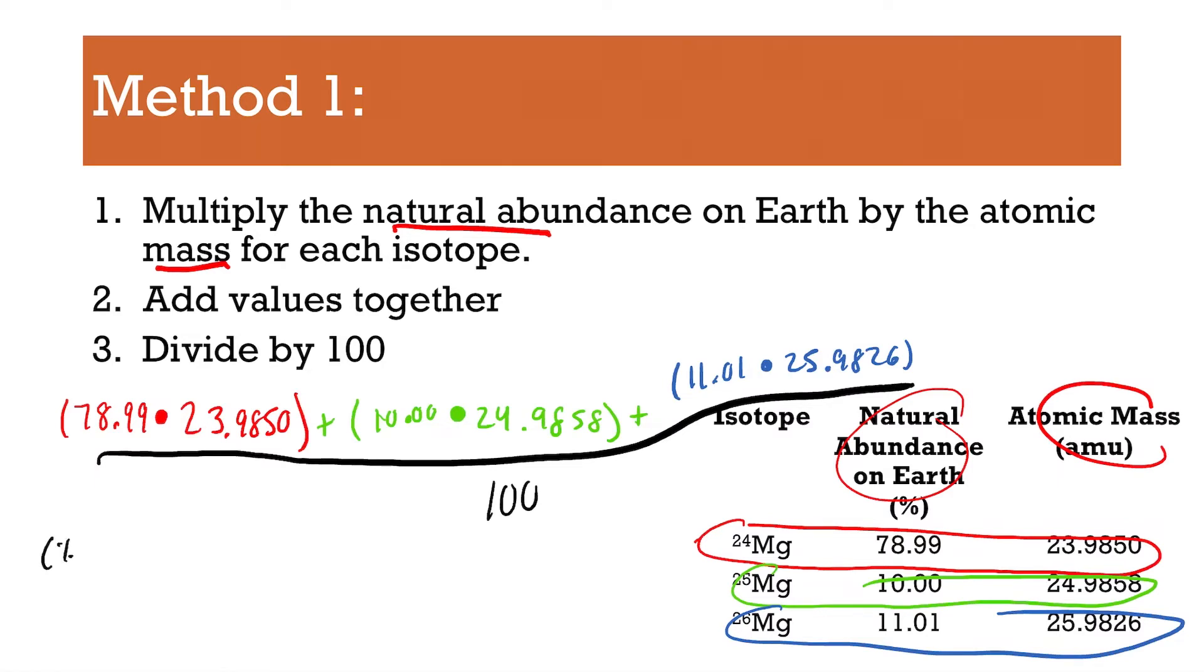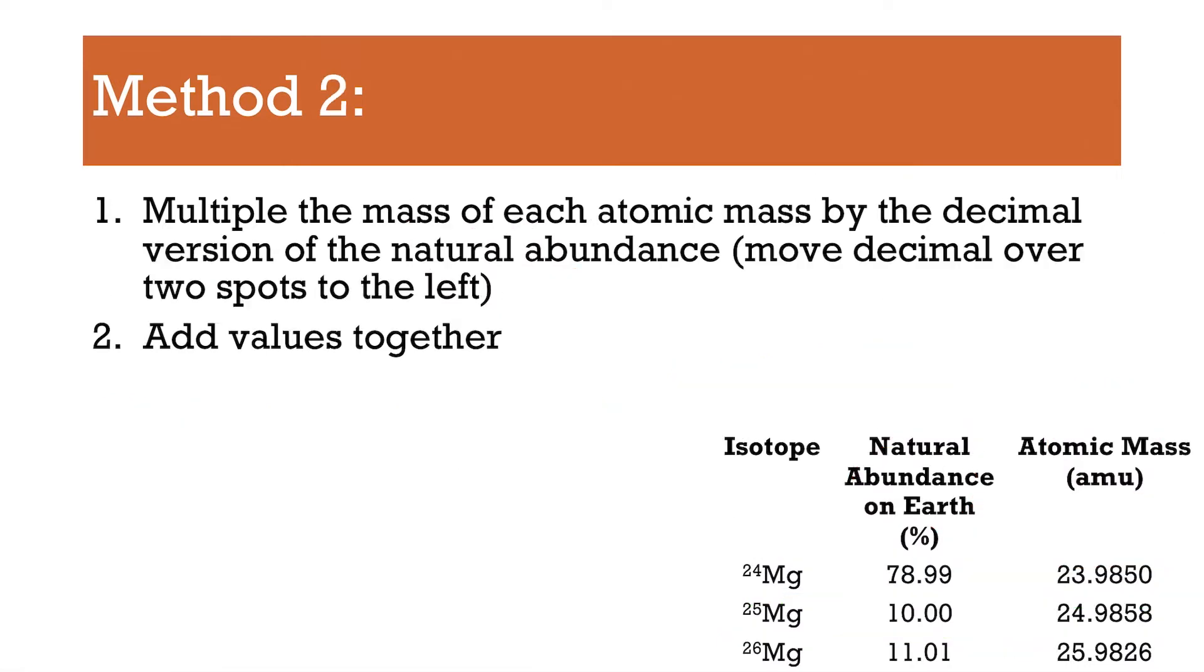All of that divided by 100. So basically, it's percent 1, mass 1, plus percent 2, times mass 2, plus percent 3, plus mass 3, as many times as you need. So if you were to put this into a calculator, parentheses are your best friends. So the entire top thing, in parentheses, divided by 100, you get 24.305 AMU. And if you were to look at the periodic table for magnesium, it would say 24.305, exactly what you got.